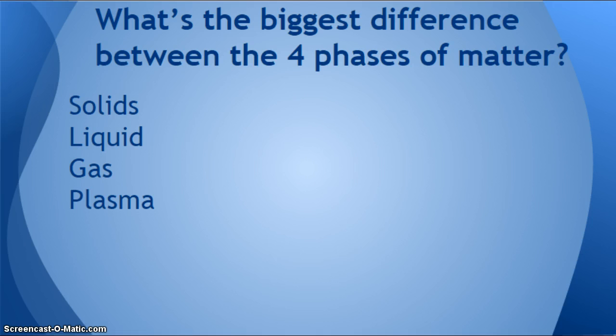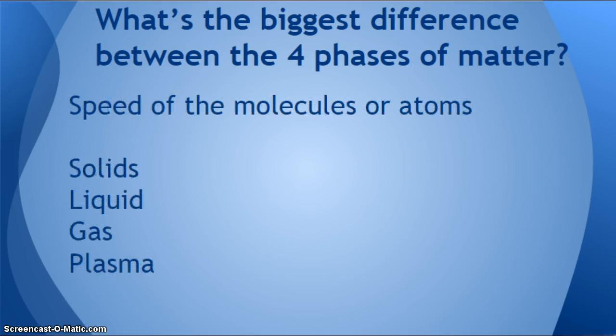The biggest difference is the speed of the molecules or atoms. So usually I tend to say molecules because there are many more things that are in molecular form. In other words, made of two or more elements. But if it's something made of just one atom, then obviously it can also be in all three phases.